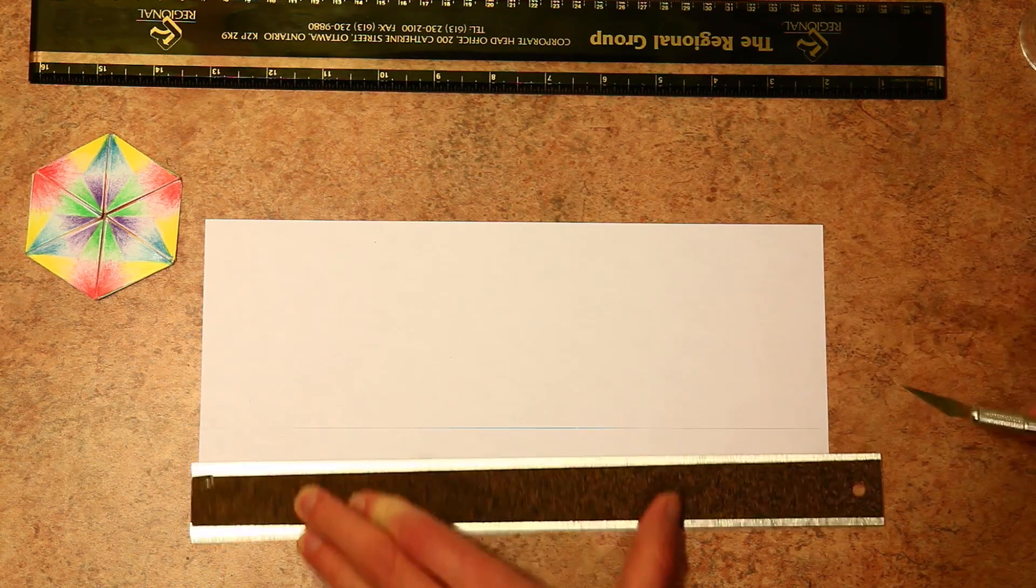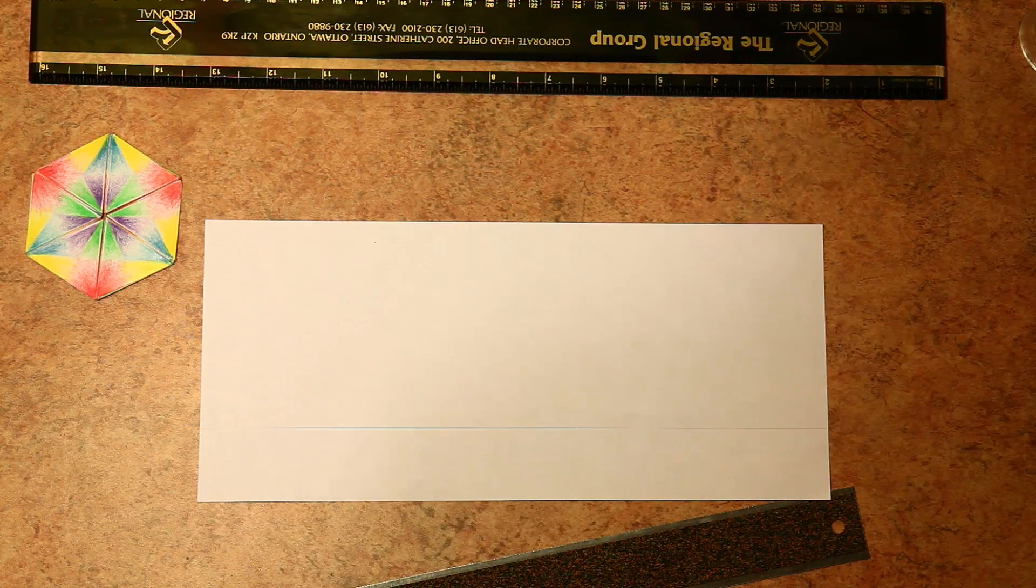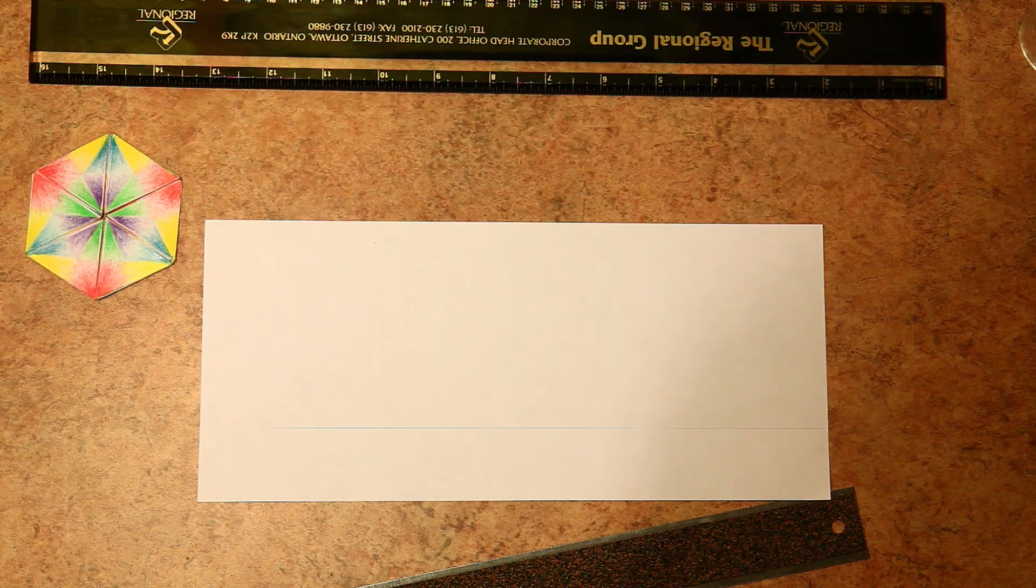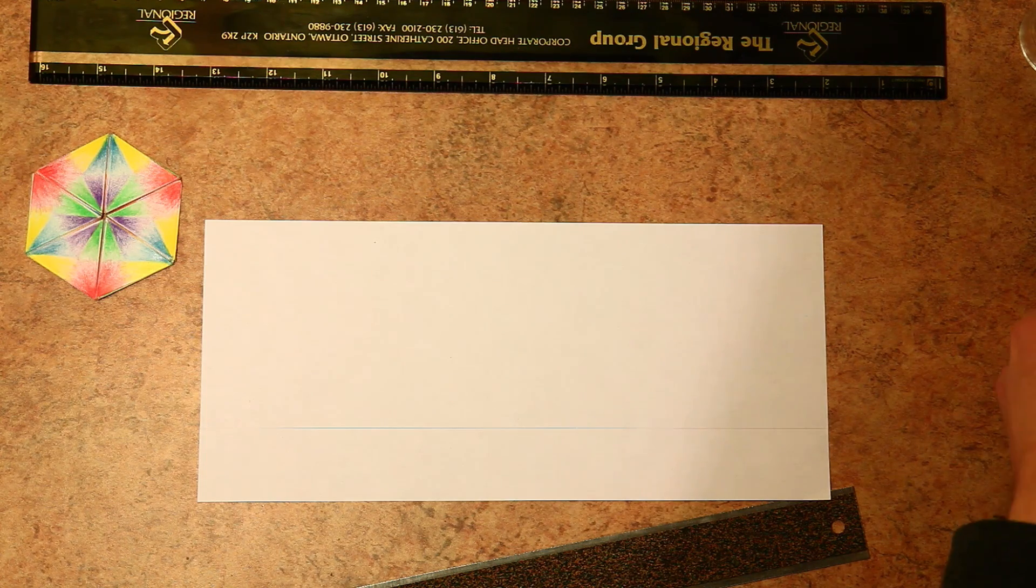The first thing you need to do to build a trihexaflexagon is to get a strip of paper. So I'll cut that out nice and straight, and we need to fold this strip into equilateral triangles.